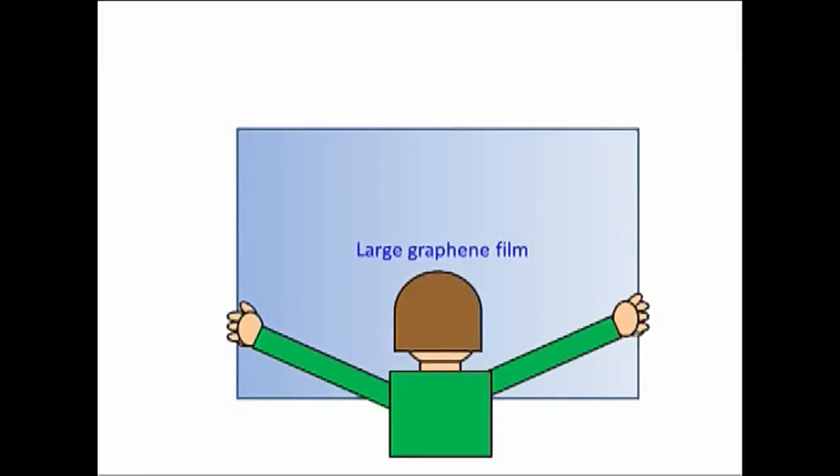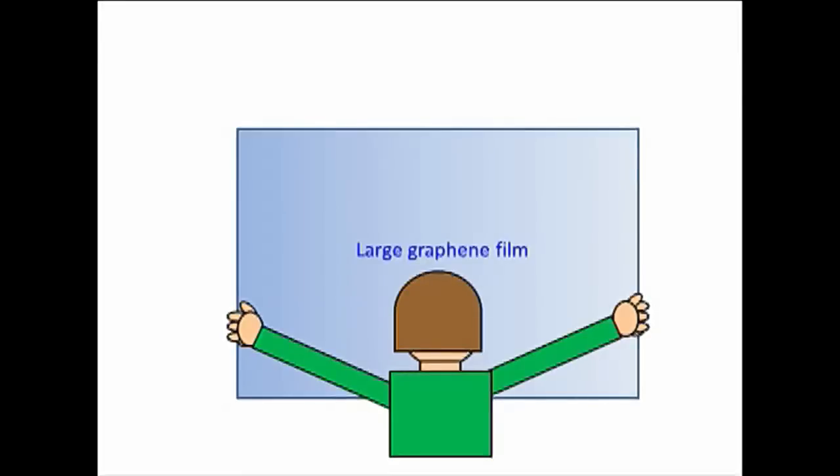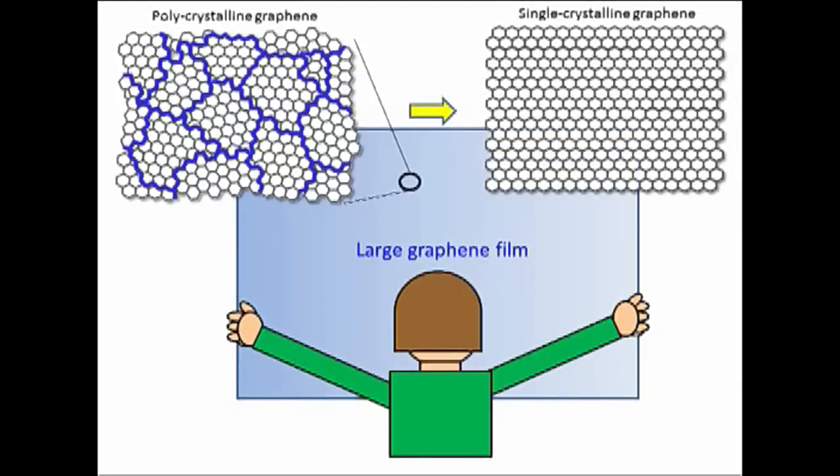Even if you can make a large area graphene film, the CVD graphene is polycrystalline. That is, the film consists of a number of small graphene domains with different orientations. The presence of domain boundaries limits physical properties of graphene, giving reduced carrier mobility and mechanical strength. We want this single crystalline structure, which is free from domain boundaries.